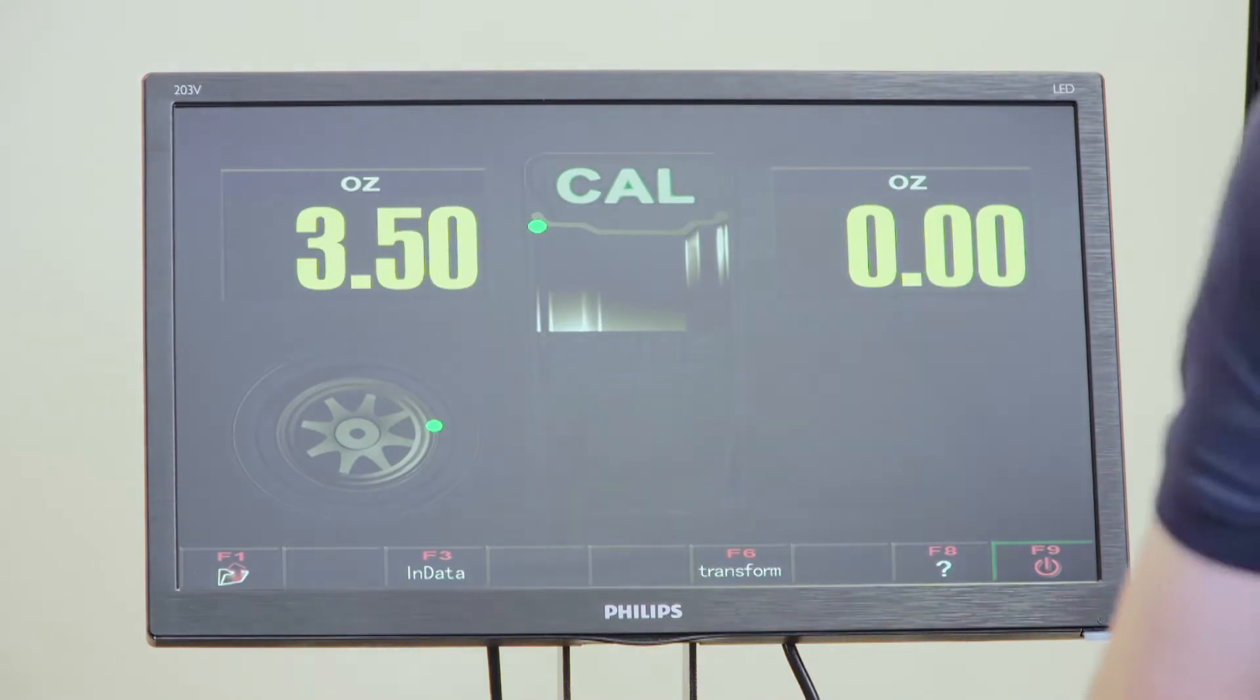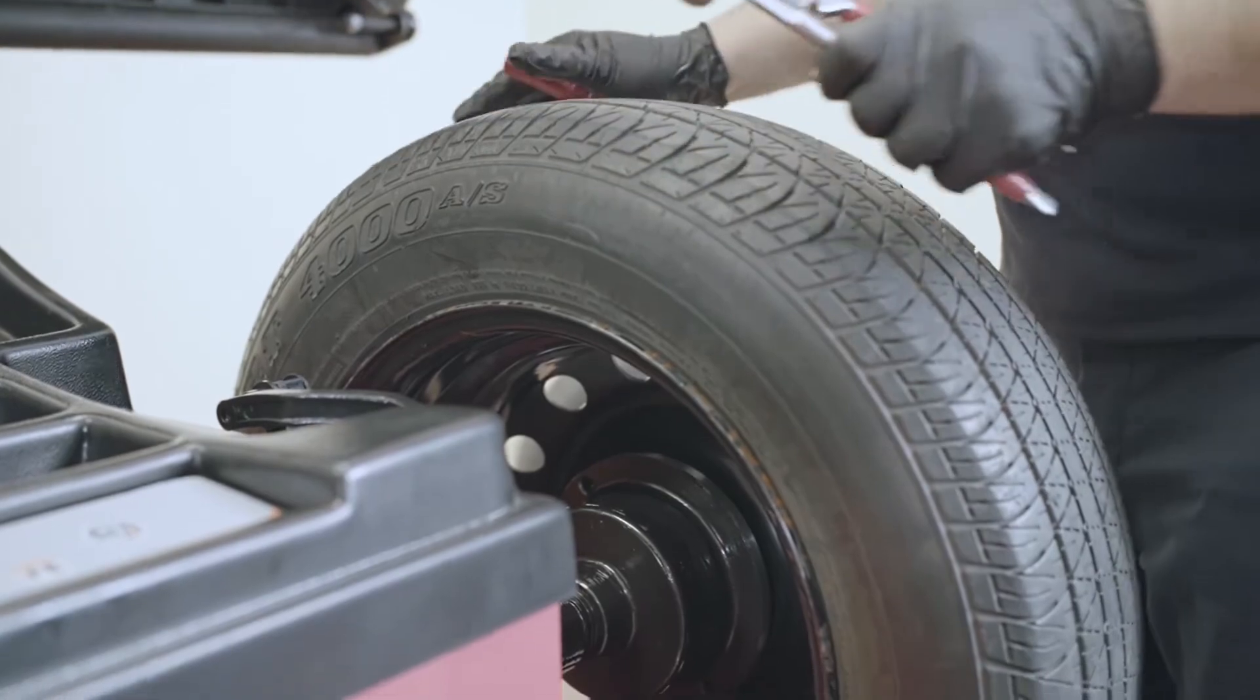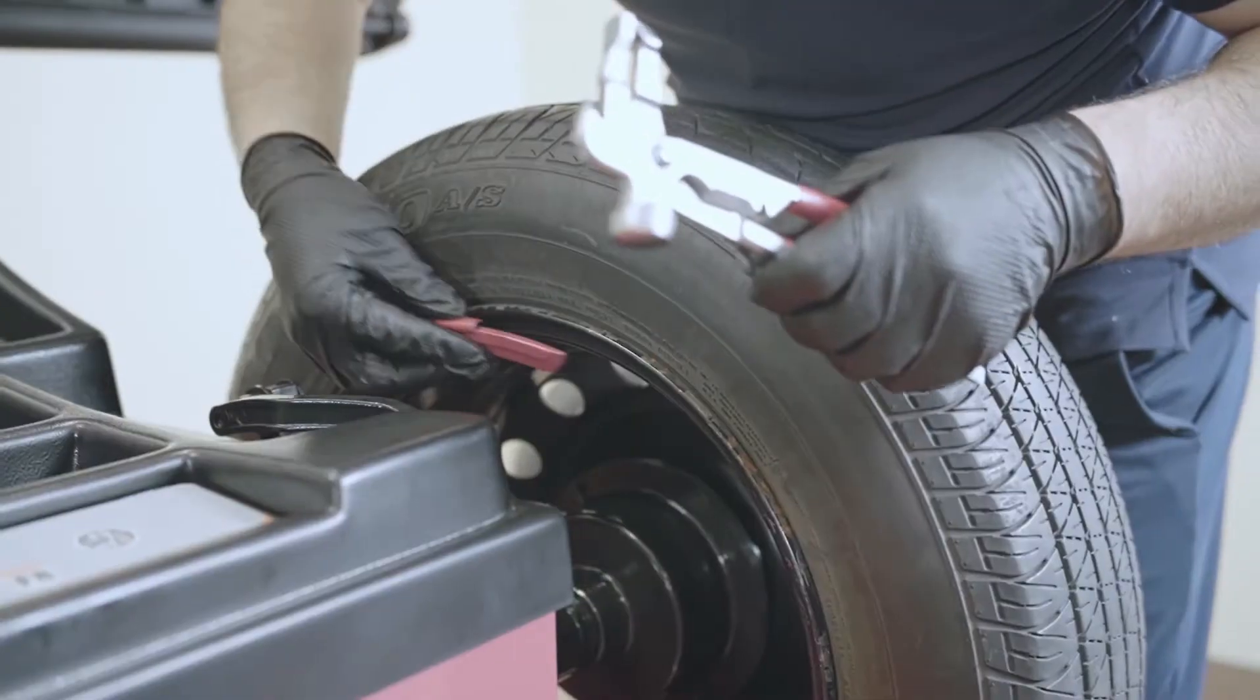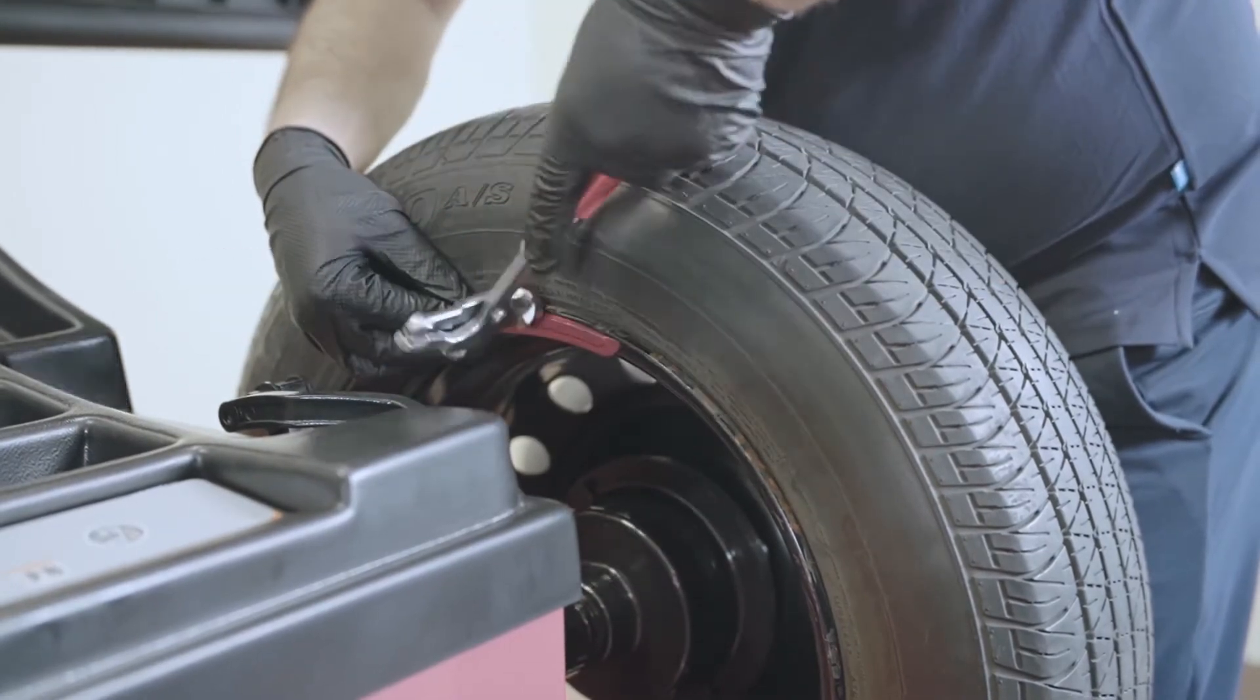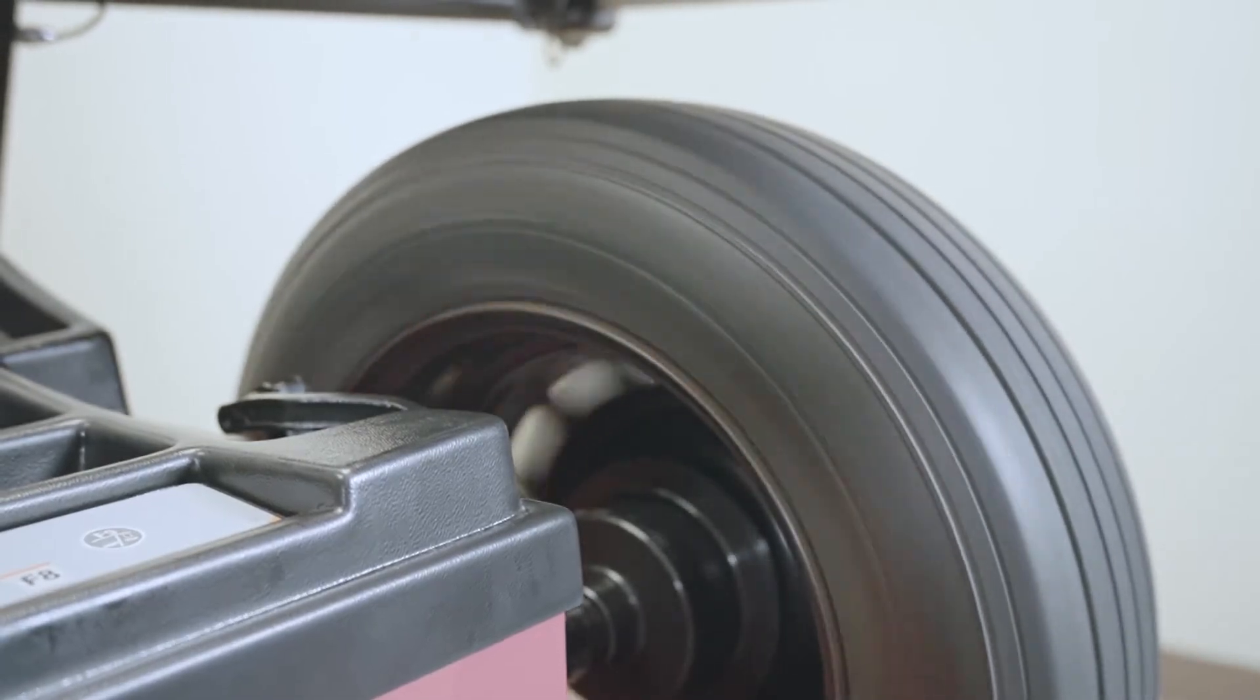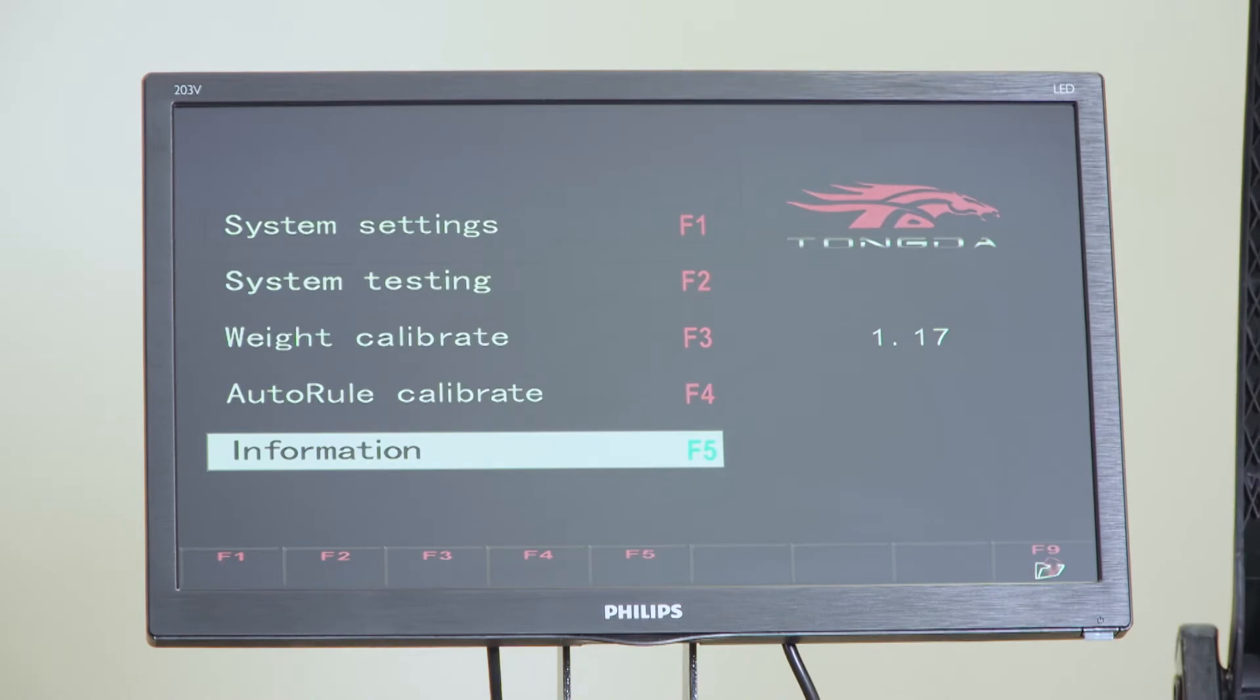Then use that same 3.5 ounce weight and put it on the inside. Again center the red arrow. And that's done for calibration.